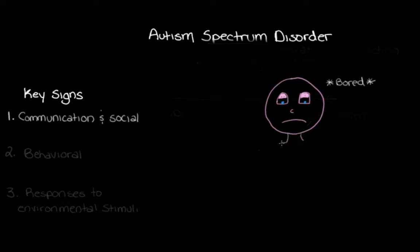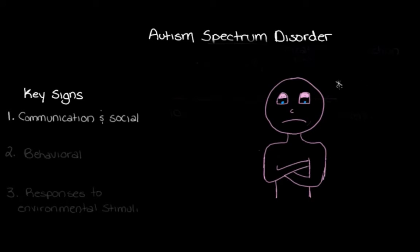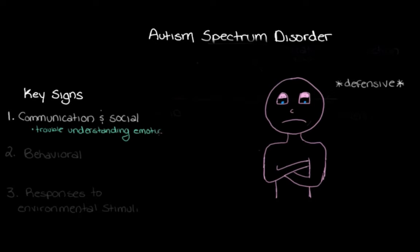Let's look at another nonverbal cue. Maybe instead of being bored, this person is getting a little defensive, so let's cross their arms — the way we sometimes do when feeling defensive. For someone with Autism Spectrum Disorder, they might not see this arm crossing as a sign of defensiveness. This nonverbal cue doesn't indicate to them that the person is feeling defensive, so they might continue the conversation as though nothing's happening. We can summarize this as trouble understanding the emotions and behaviors of others.